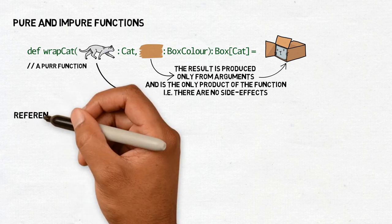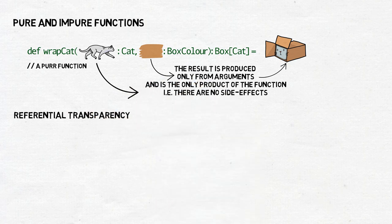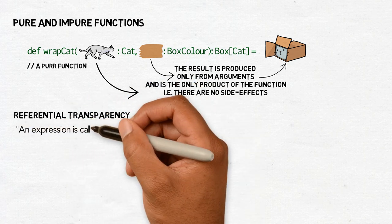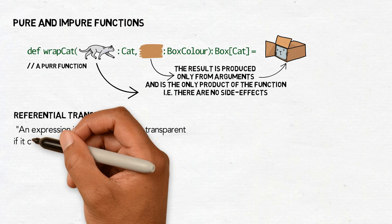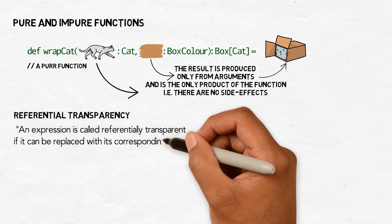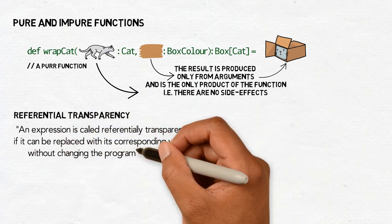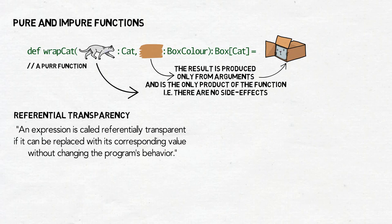One thing it gives us is referential transparency. An expression is called referentially transparent if it can be replaced with its corresponding value without changing the program's behavior. This, in turn, makes programs better in a number of ways.